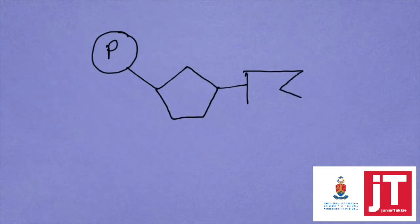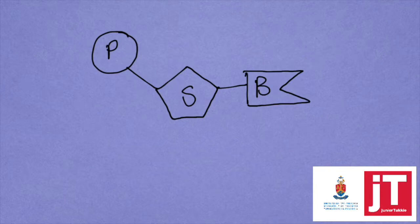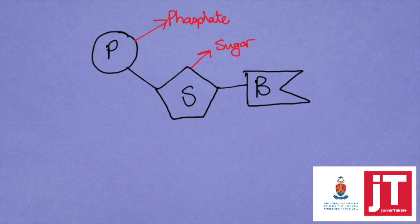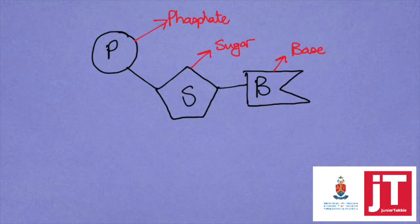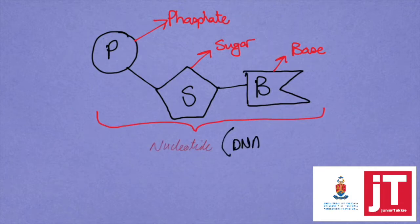The first thing we're going to look at when looking at DNA is the base unit. What we're looking at here is a nucleotide that is made up of three parts. The first part is our phosphate, the second part is going to be the sugar — a pentose sugar — and the third part of our nucleotide is going to be a base. These are all very unique, looking specifically at DNA versus RNA, but we look at this as being the nucleotide.